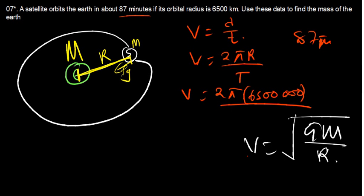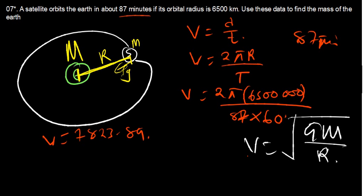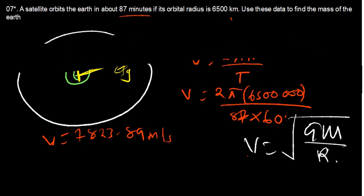Get your calculators and find the answer. I'm getting V equals 7,828.89 meters per second. Please confirm — is that the same answer? Good. Now let's plug in the values.